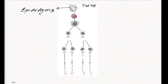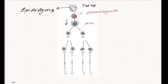This is our spermatogonia. When there is differentiation in spermatogonia, it develops into primary spermatocytes. This development into primary spermatocytes occurs with the help of a cell division called mitotic division.